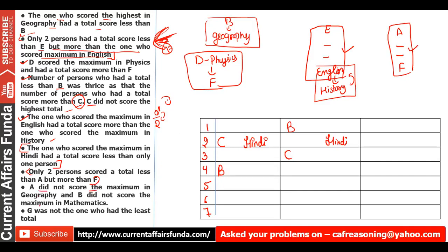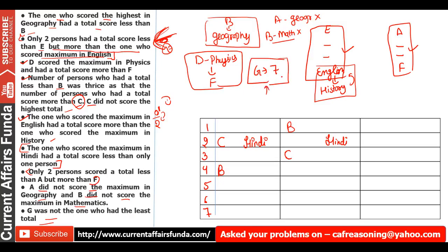Further clues: A did not score the maximum in Geography, and B did not score the maximum in Mathematics. Also, G was not the one who had the least total — meaning the 7th rank does not belong to G. With this, all the puzzle paragraph clues are complete and we can now solve the question using these hints.